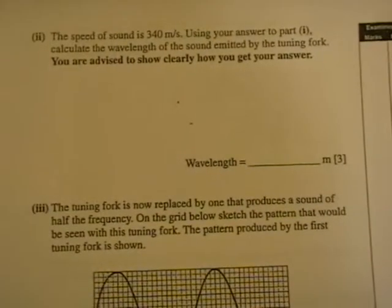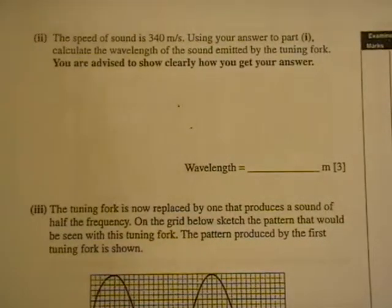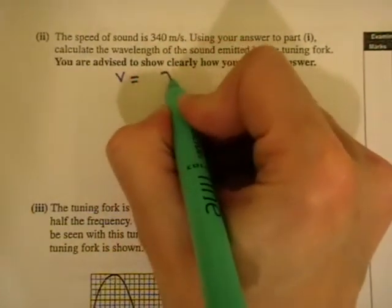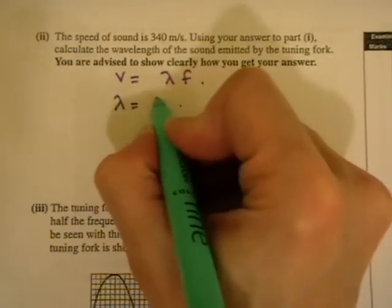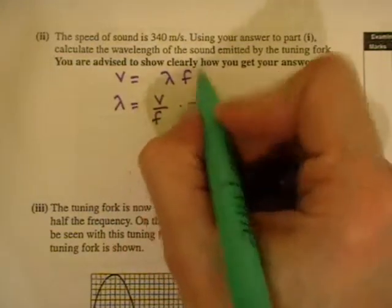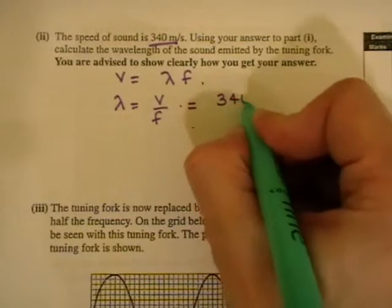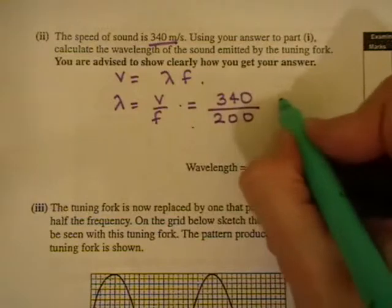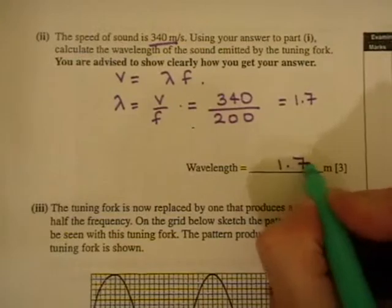The speed of sound is 340 metres per second. Using your answer to part one, calculate the wavelength of the sound emitted by the tuning fork. So we're going to start off here with V equals lambda F and rearrange it. So lambda is what we're looking for, and lambda is equal to V divided by F. So we see that our speed of sound is 340, and the frequency from over the page was 200. And that gives an answer of 1.7, so it's 1.7 metres.